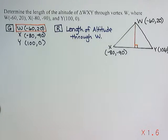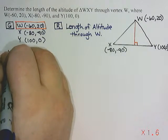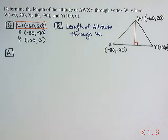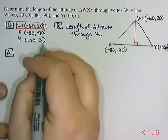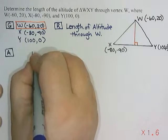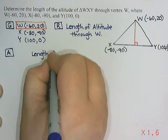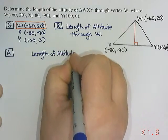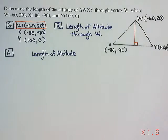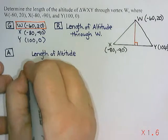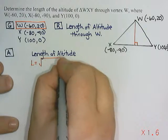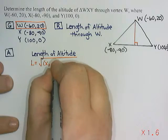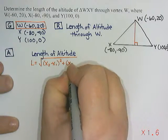So the tricky part is the analysis, trying to break down the question and figure out what we're going to do. So what does the question want? The question wants the length of the altitude. Is there a formula for length? Yes, there is. So I'm going to write that formula down: L = √((x₂-x₁)² + (y₂-y₁)²).